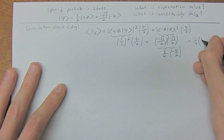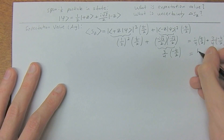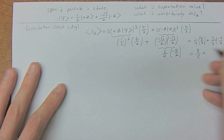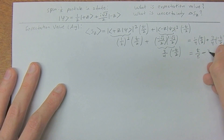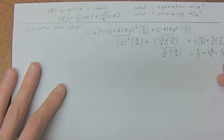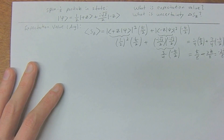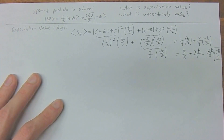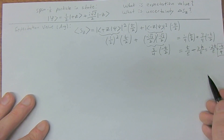So the whole expression becomes one-quarter times h-bar over two, plus three-quarters times negative h-bar over two, which equals h-bar over eight minus three h-bar over eight. The sign is very important here. In total we get negative two h-bar over eight, or negative h-bar over four. So next we're going to need to calculate the squared expectation value.